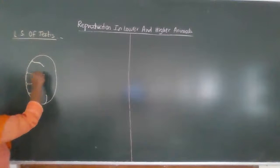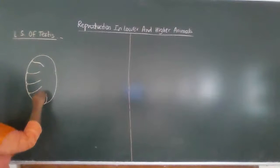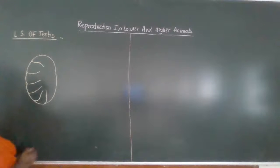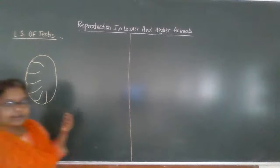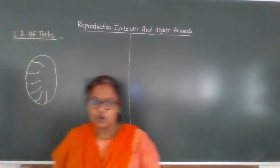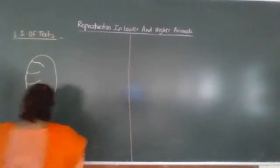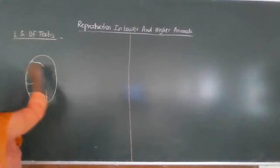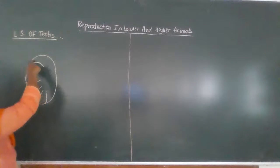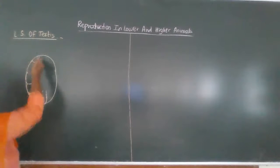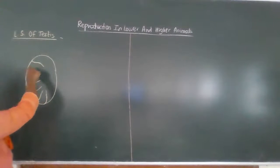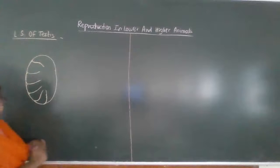These are the testicular lobes. In the testis there are about 200 to 300 testicular lobes. This is the tunica albuginea, which innervates inside to form testicular septa, and these are the testicular lobes.